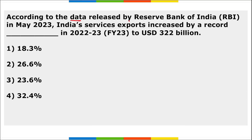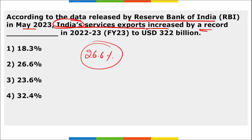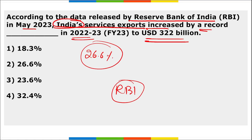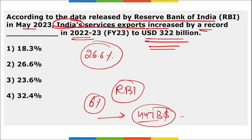According to data released by RBI in May, India's service exports increased by a record 26.6% in the fiscal year 2022-23 to around 322 billion dollars. Merchandise exports grew by only 6%, with a total valuation of 447 billion dollars in fiscal year 2023.